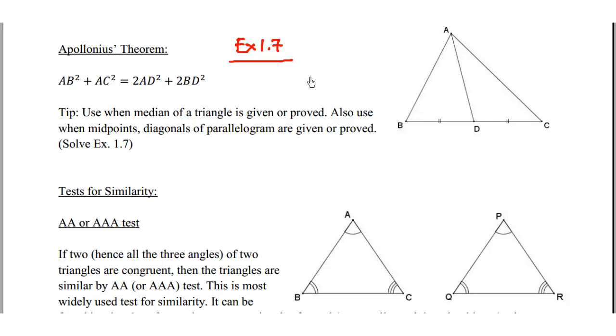Exercise 1.7 deals with the Apollonius theorem. Suppose there is any triangle ABC and if AD is the median on BC, so it means that D is the midpoint of BC. In other words, BD is equal to DC.